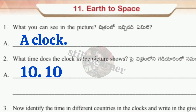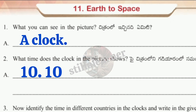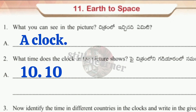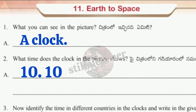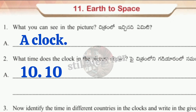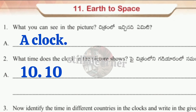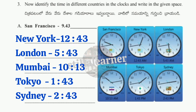Question one: What can you see in the picture? Answer: A clock. Question two: What time does the clock in the picture show? Answer: 10:10. No AM or PM is written because the clock does not indicate whether it is morning or evening.